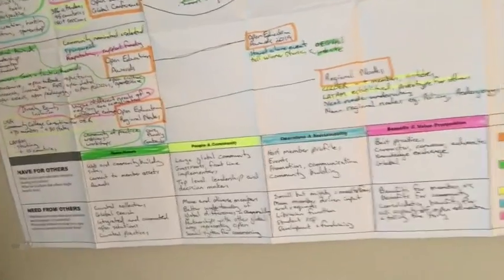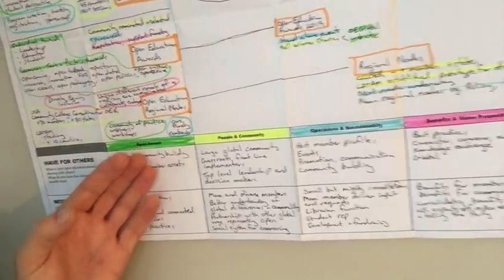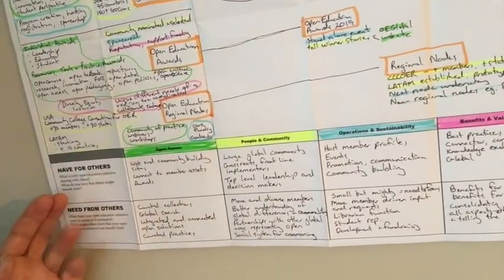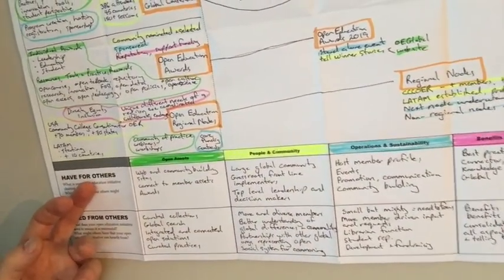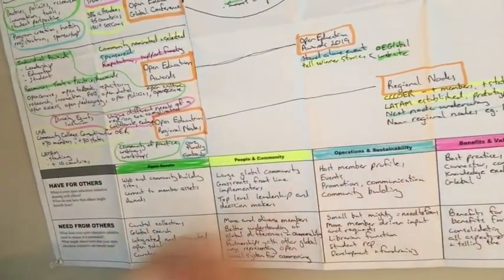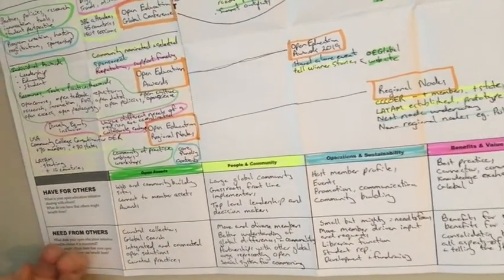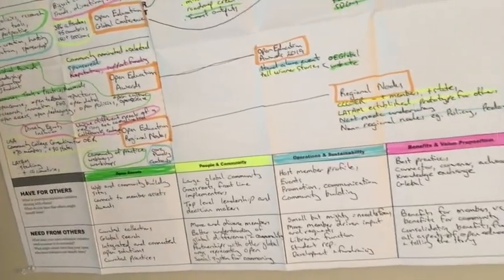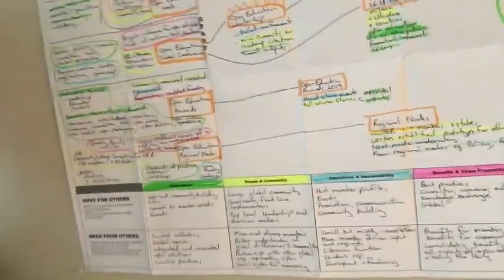Across the bottom, I put in place for each of the four principal categories what we have that others might benefit from receiving from us, and what we need from others, how we might benefit from sharing with others who are doing Open Education Initiatives themselves.